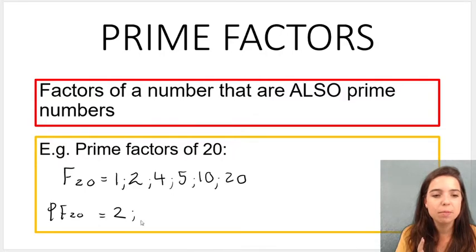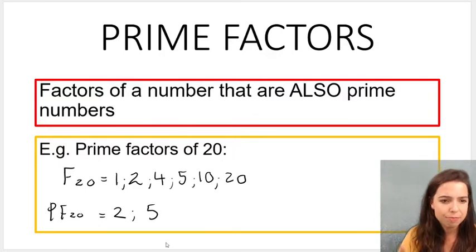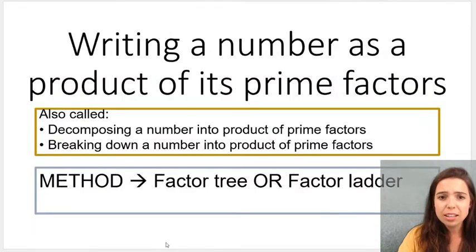So there we go, prime factors of 20: 2 and 5. Then, in the next video, what we're going to be discussing is how to write a number as a product of its prime factors.